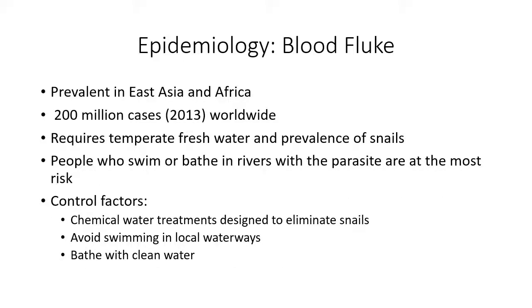The blood fluke is mainly prevalent in East Asia and Africa, with approximately 200 million cases recorded. It requires a temperate climate, the presence of snails, and fresh water. The people most at risk are those who swim, live, or bathe in these rivers. The best control measures include treating the water to eliminate snails, boiling or treating water before bathing, or simply avoiding swimming in local waterways to reduce the risk of contracting the parasite.